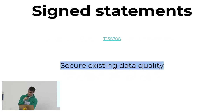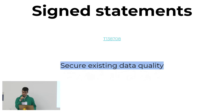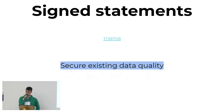That's related to signed statements, which comes from a concern that some data providers have — for example, a statement referenced to UNESCO — and then someone vandalizes the statement, and they're worried it will look like UNESCO still asserts that vandalism value. With signed statements, they can cryptographically sign the reference. That doesn't prevent any edits, but if someone vandalizes the statement or edits it in any way, the signature is no longer valid and you can tell this is not exactly what the organization said.